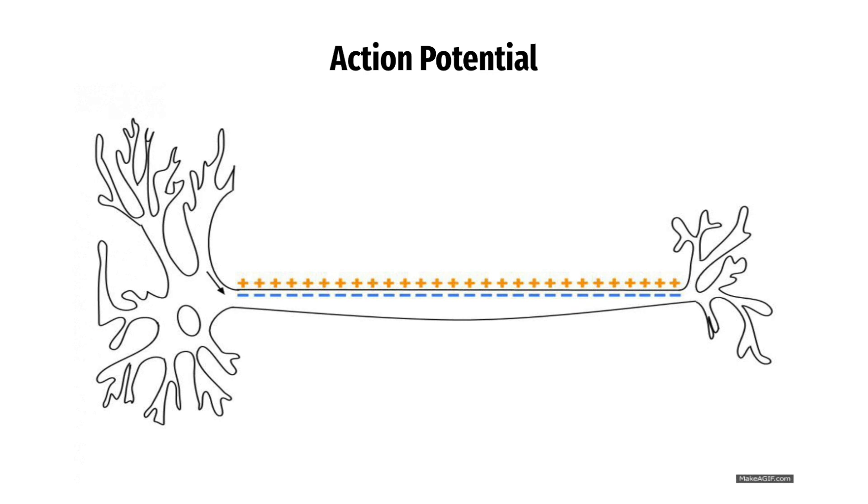The neurotransmitters bind to the receptors on the dendrites of the receiving neuron, which is how a signal is transmitted from one neuron to another.